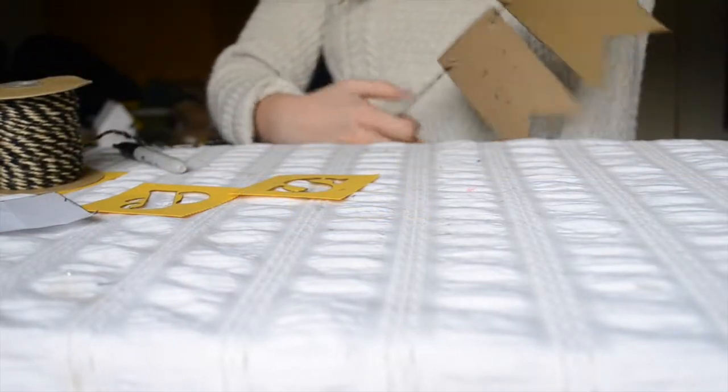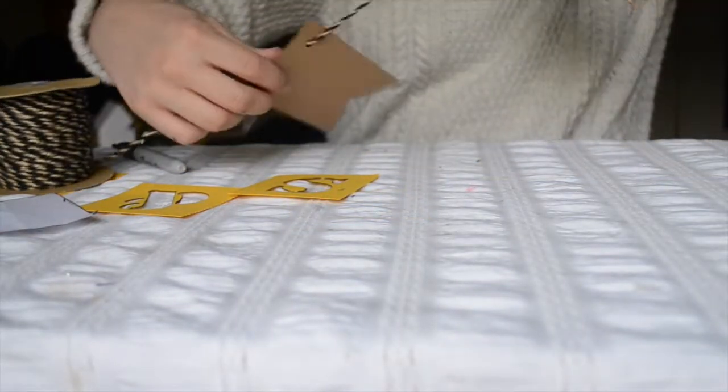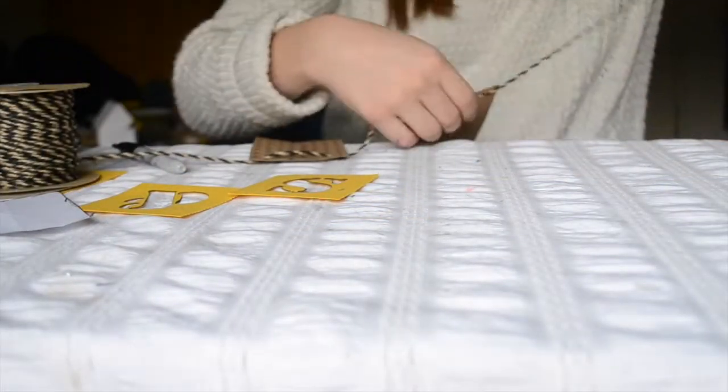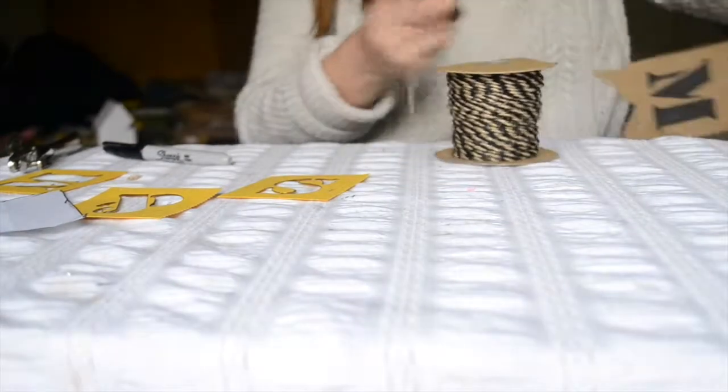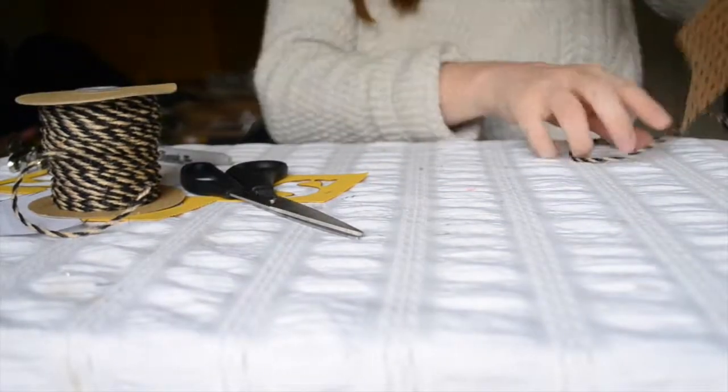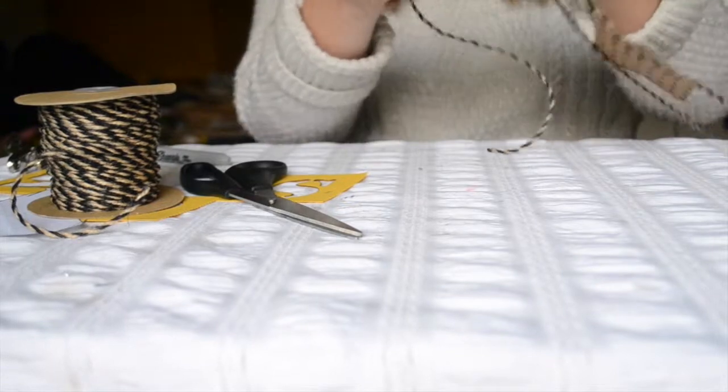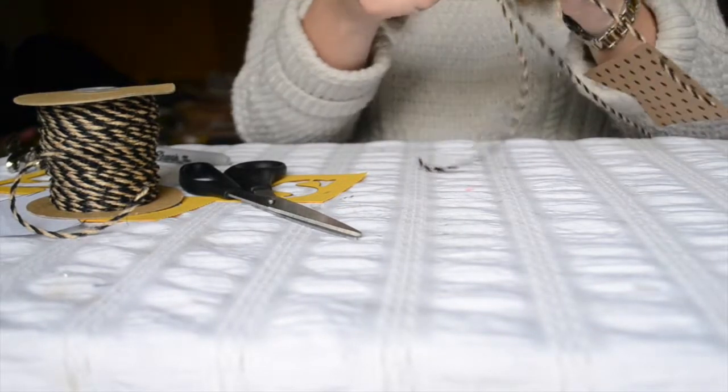Okay so now I'm going to go ahead and spread them out. That looks about right and I'll just go ahead and cut off the end of the jute. Then you can go ahead and tie a little knot in it just like this. Then you have a great little hanger and you are ready to hang up your banner.